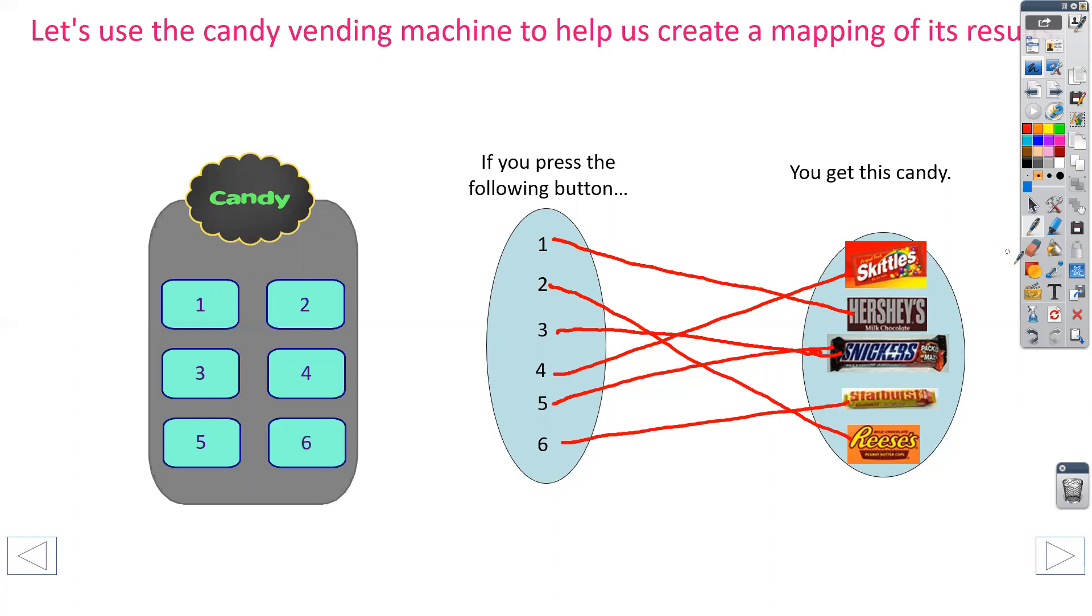So even though on this vending machine, I had two buttons that created Snickers, notice though, on this vending machine, every button only went to one type of candy. So like number one only went to Hershey's. Number two only went to Reese's. Three and five went to Snickers. But number three, if I press three, it didn't go to Snickers and another one. It just went to Snickers. So each button correlated or matched up with one type of candy.